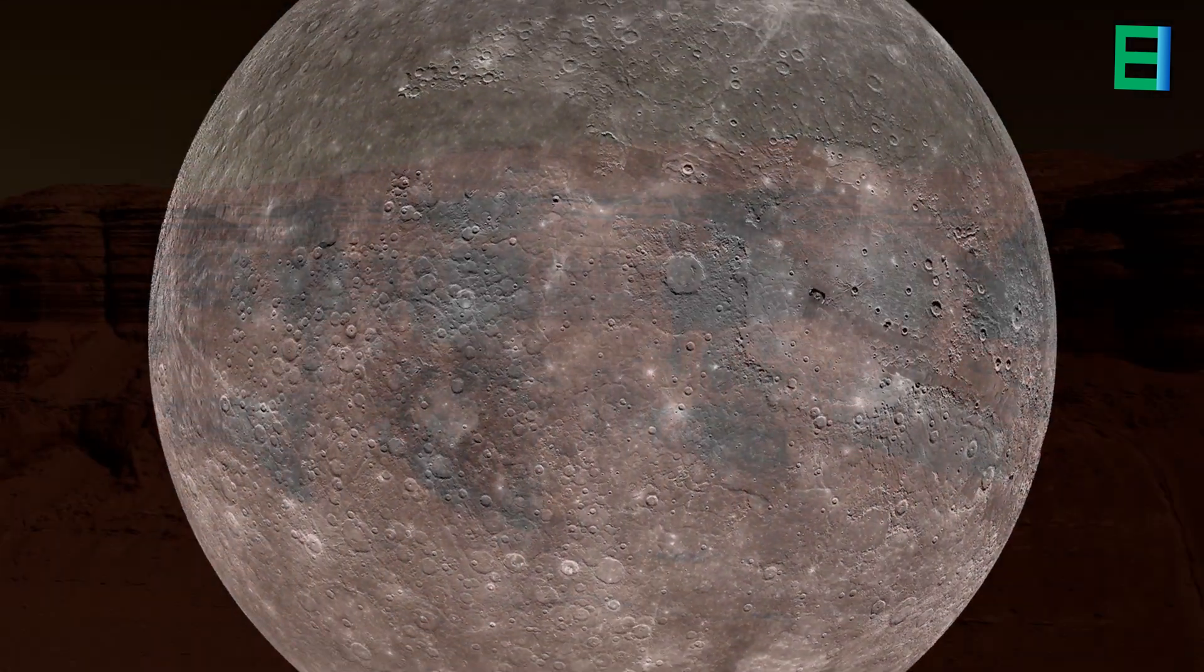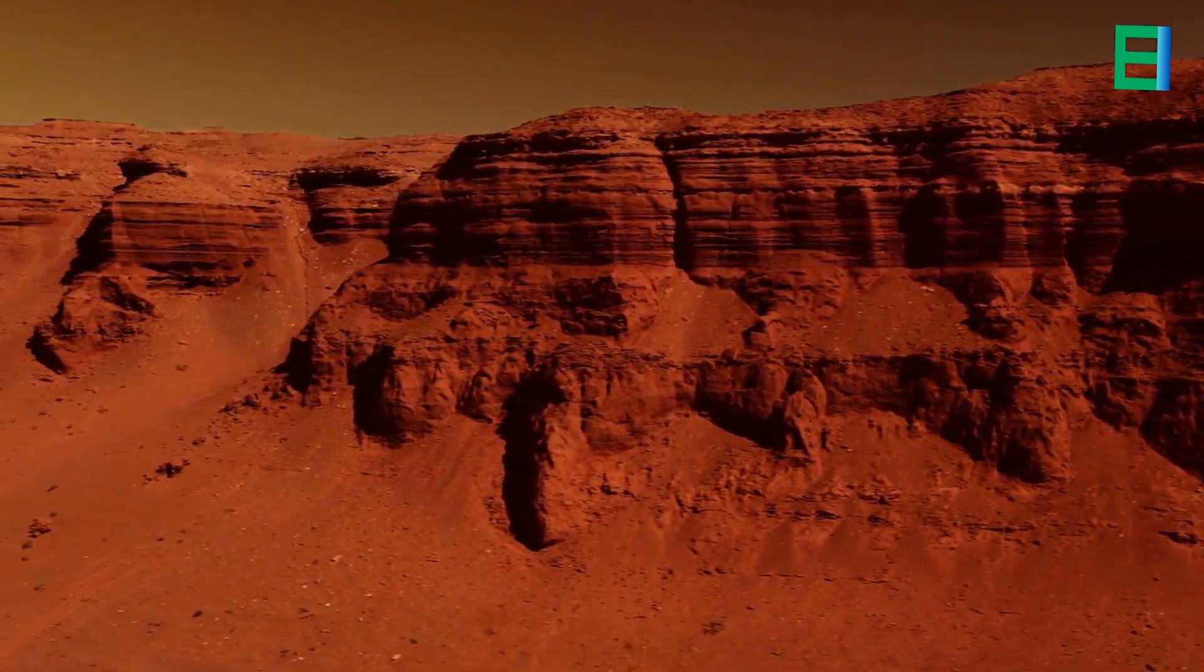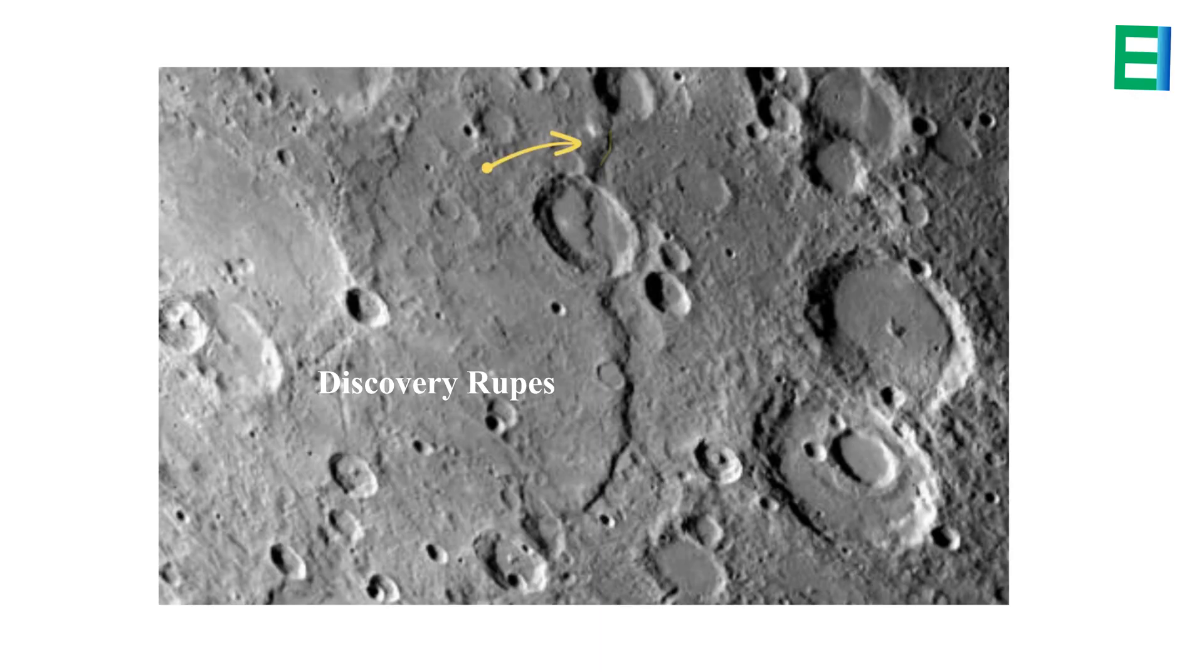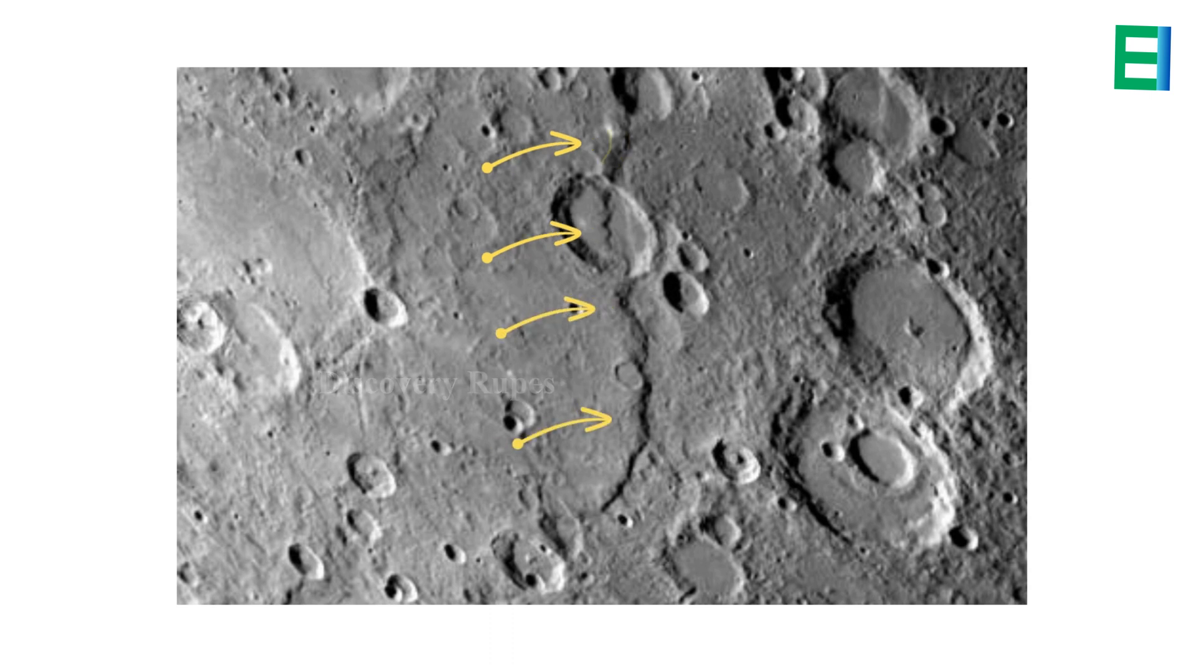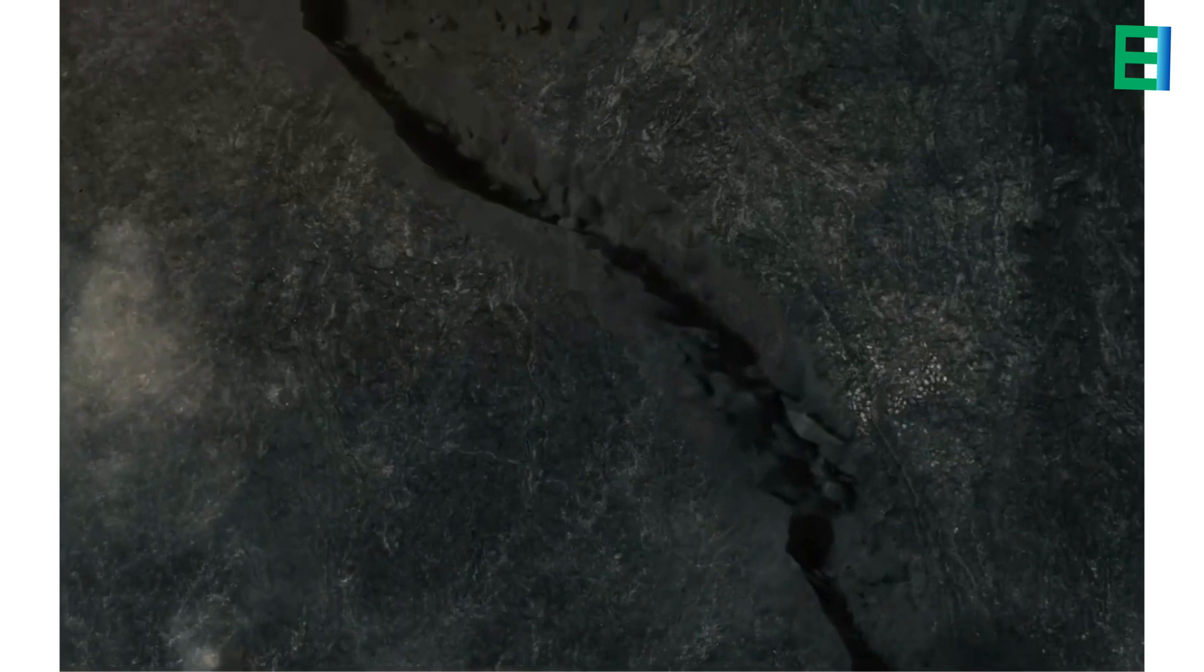One of the most striking features on Mercury's surface is its network of cliffs or scarps. These cliffs, such as the prominent Discovery Rupes, can extend for hundreds of miles and rise to heights of several kilometers. They are believed to have formed as the planet's interior cooled and contracted, causing the crust to buckle and fracture. The presence of these scarps suggests that Mercury experienced significant tectonic activity in the past.